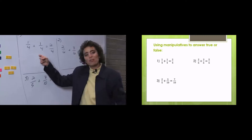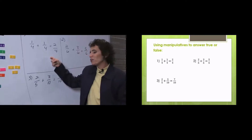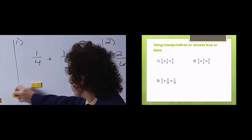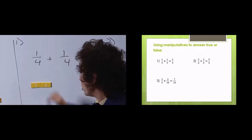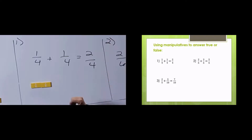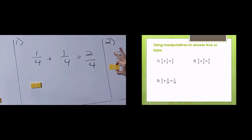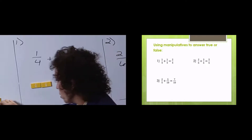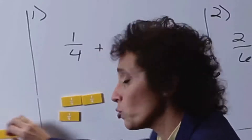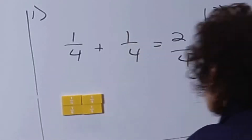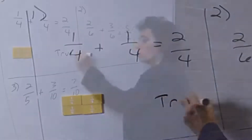Alright, so we're trying to see if one fourth plus one fourth equals two fourths. Let's take a look. Let's bring this one fourth over, this other one fourth over. So there's your one fourth plus one fourth. We have to find out if it's equal to two fourths. When I say one fourth, I'm talking about something this size. Here's one fourth plus one fourth, and it's obviously true because we just brought the same amount over. So that's true.